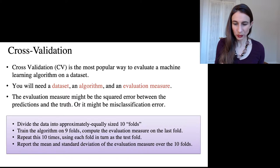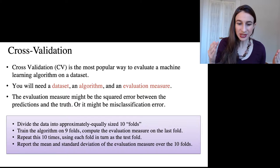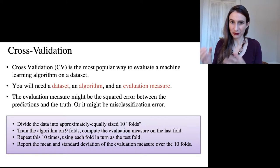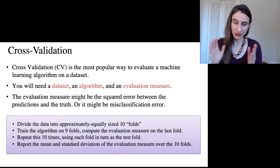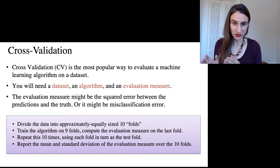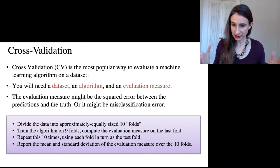Now, the way the procedure works is that you divide your data into approximately equally sized folds, and there are ten of them, and then you train the algorithm on the first nine, and you test on the last fold, and you repeat this ten times, using each fold in turn as the test fold. And then in the end, you report the mean and standard deviation of the evaluation measure over the ten folds.